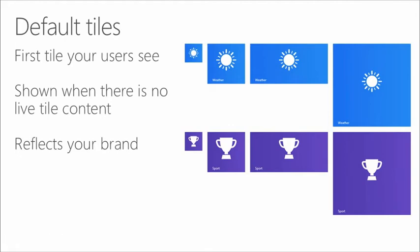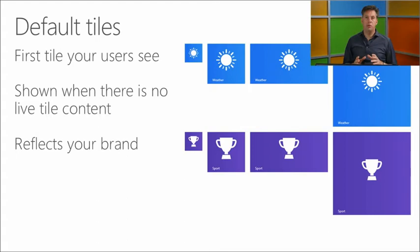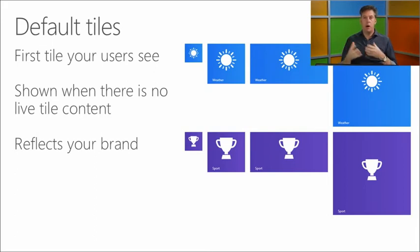You have default tiles — if there's no live content or it's switched off, you provide a logo for that tile. With different sizes, that logo is shown, and depending on size, it can also show a name like 'Weather' or 'Sports' on bigger tiles. You should really think about this logo because it should reflect your brand.